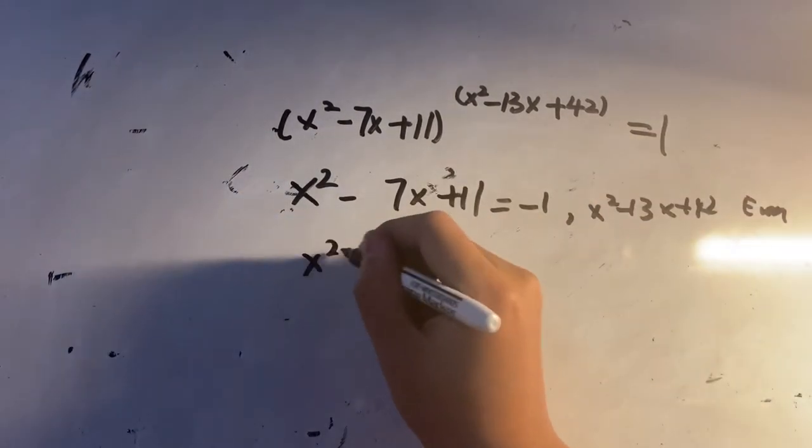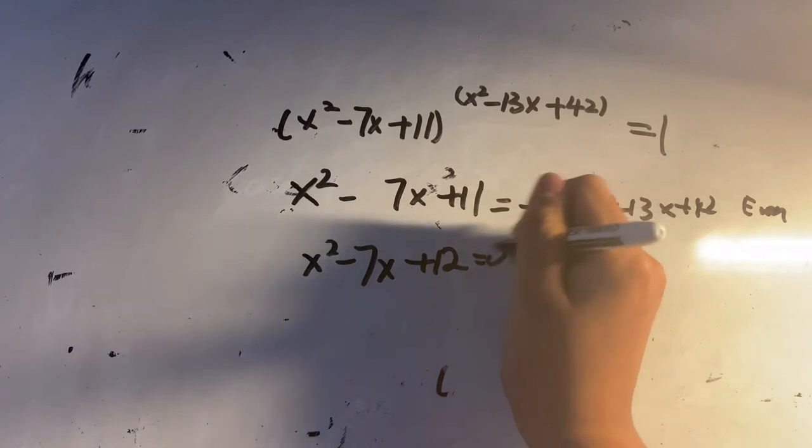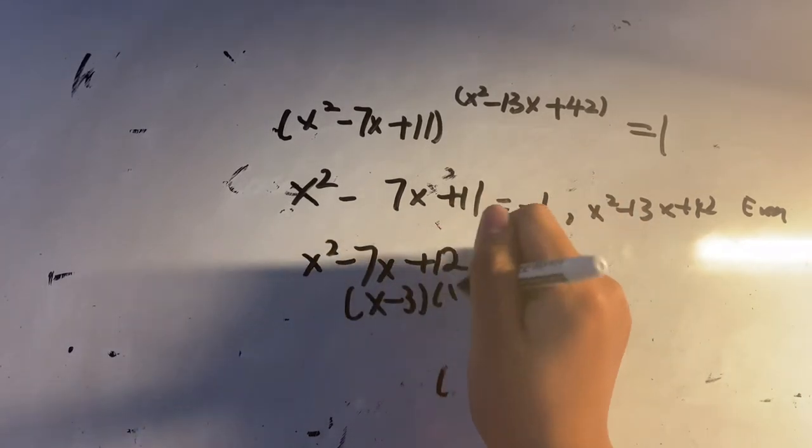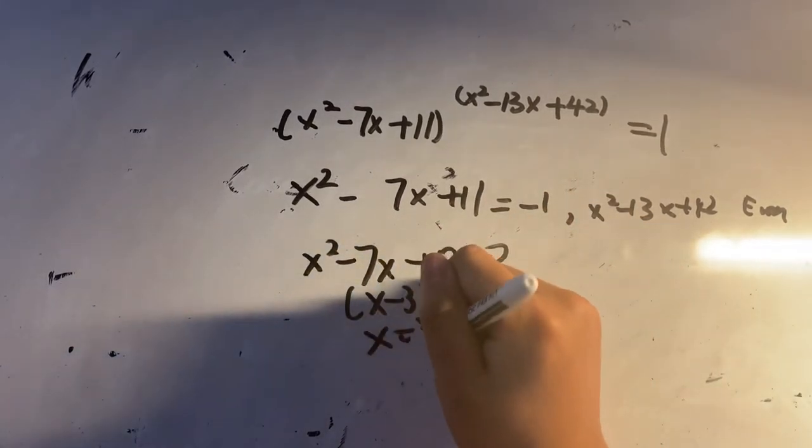So x squared minus 7x plus 12 equals 0. Factoring gives (x minus 3)(x minus 4) equals 0, so x can equal 3 or 4.